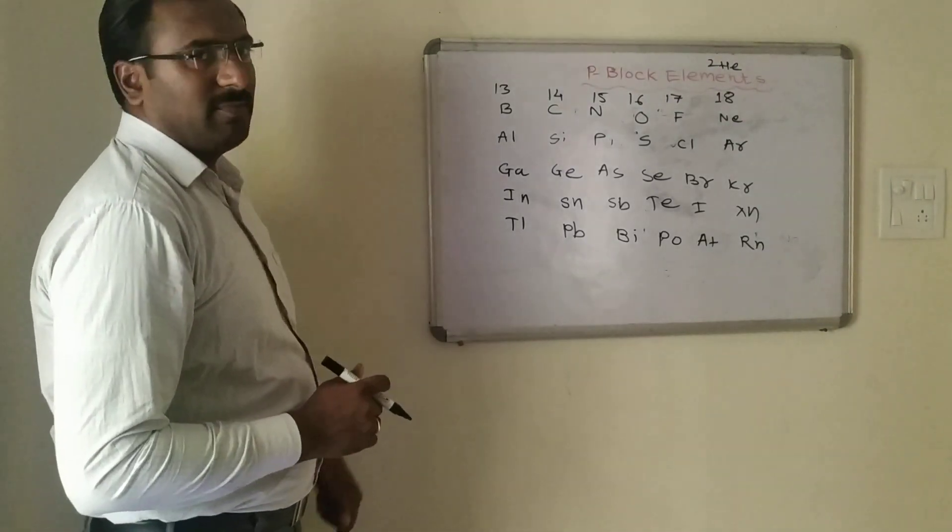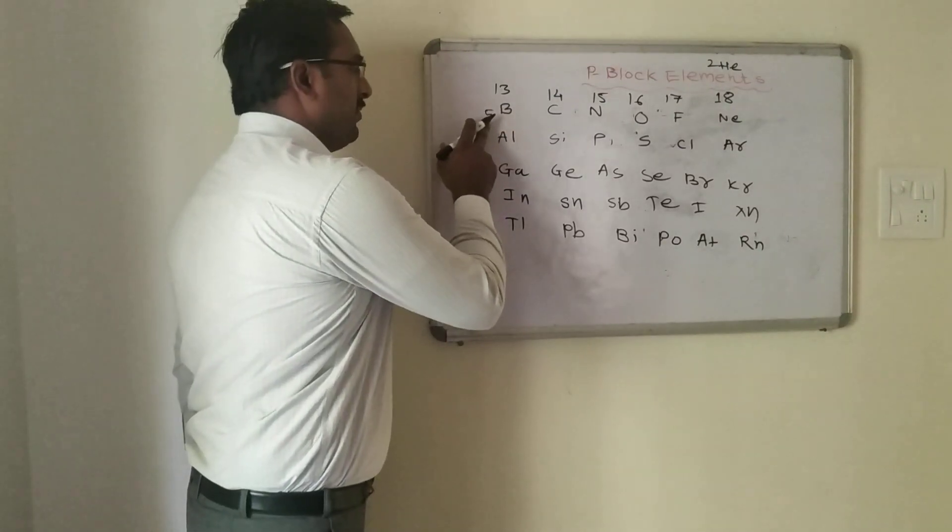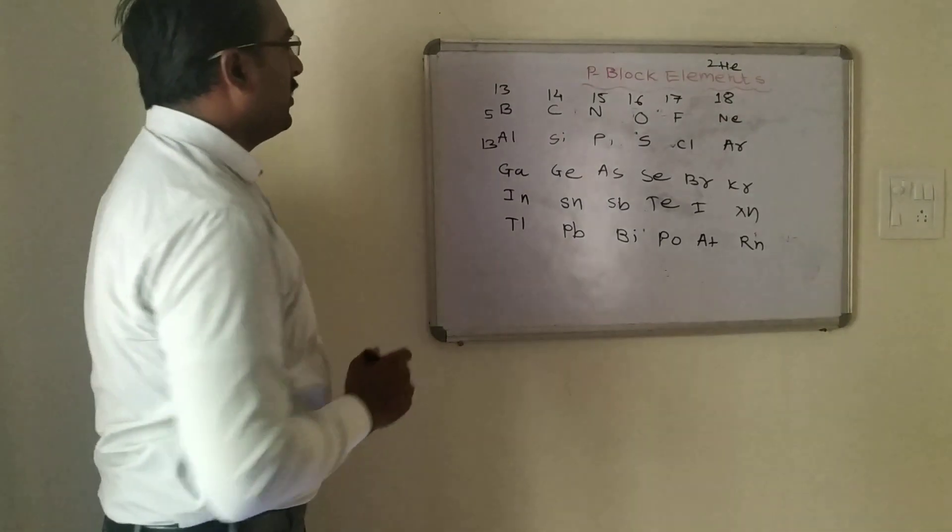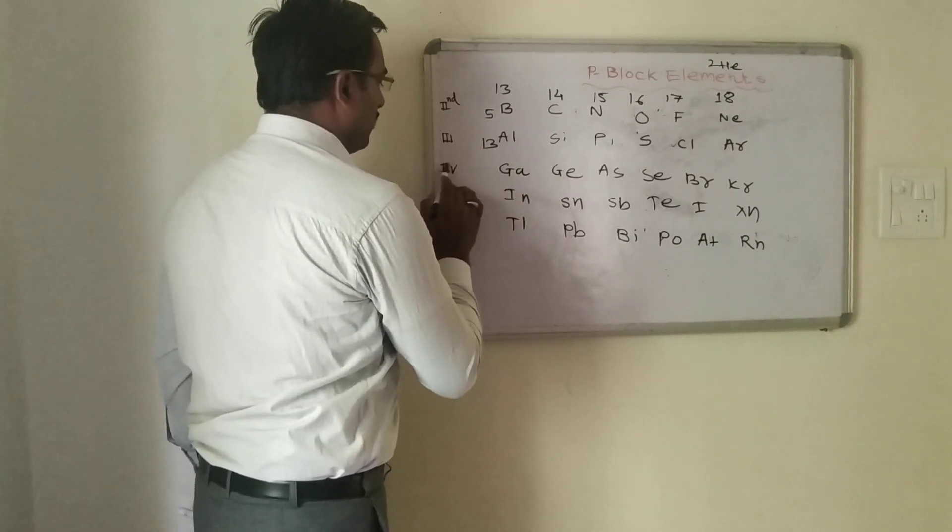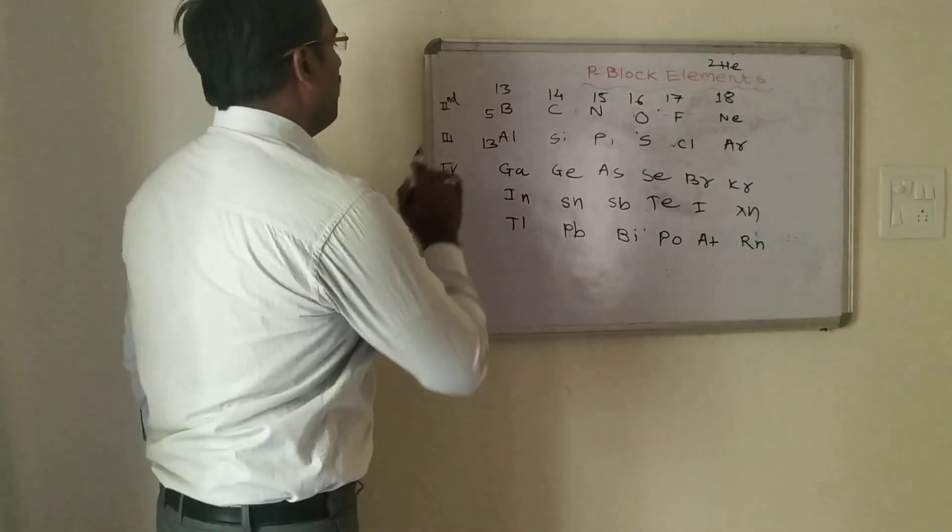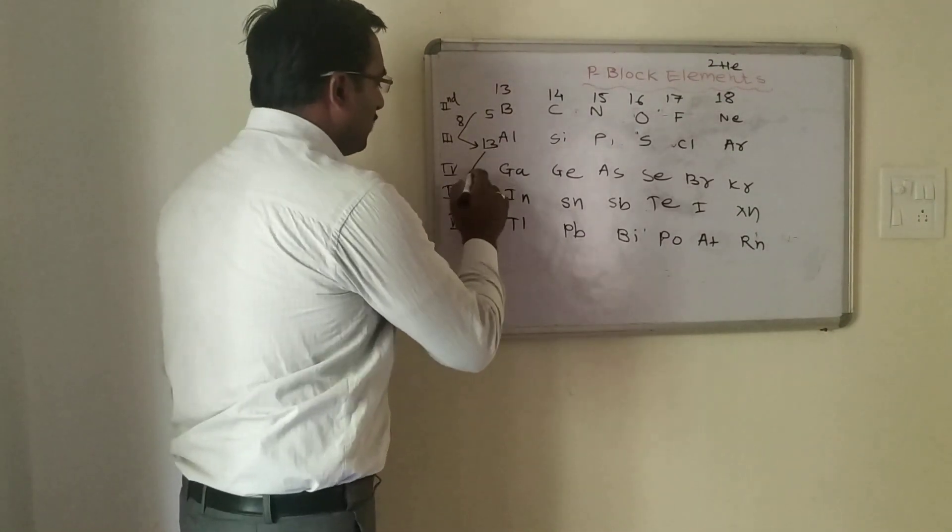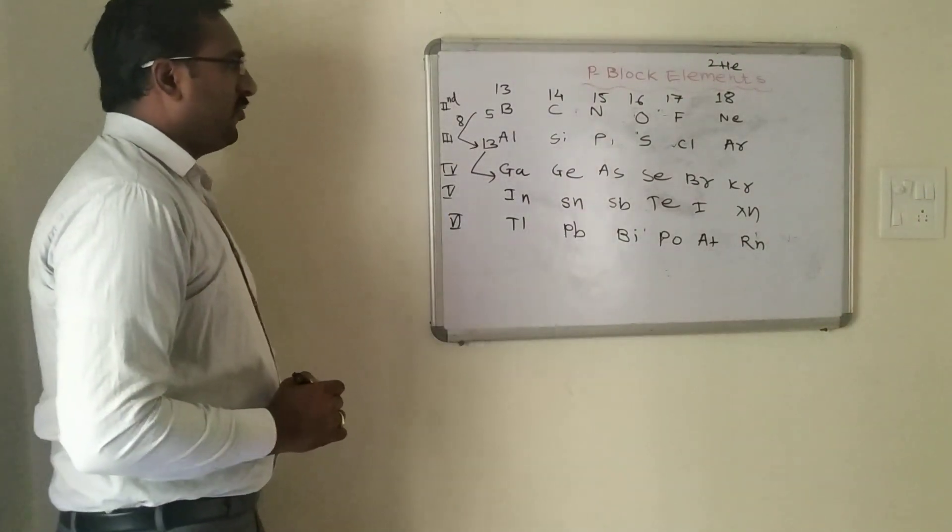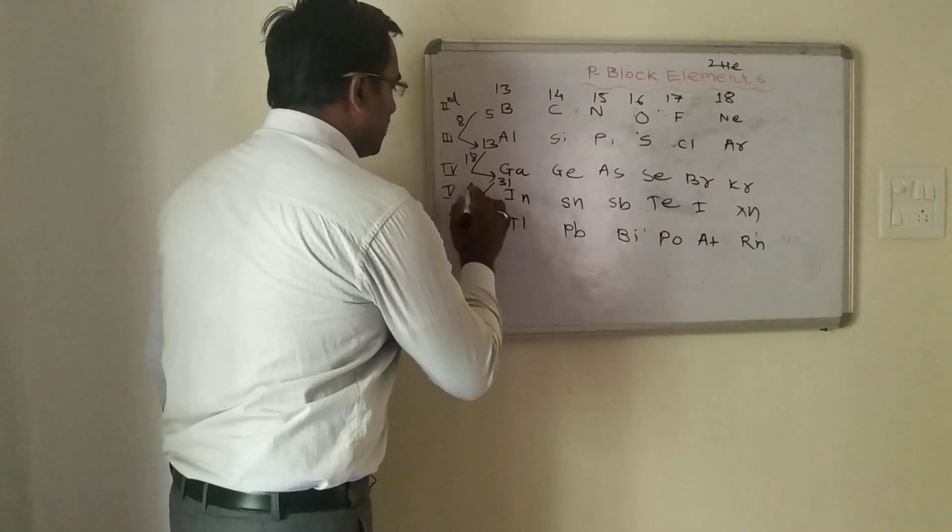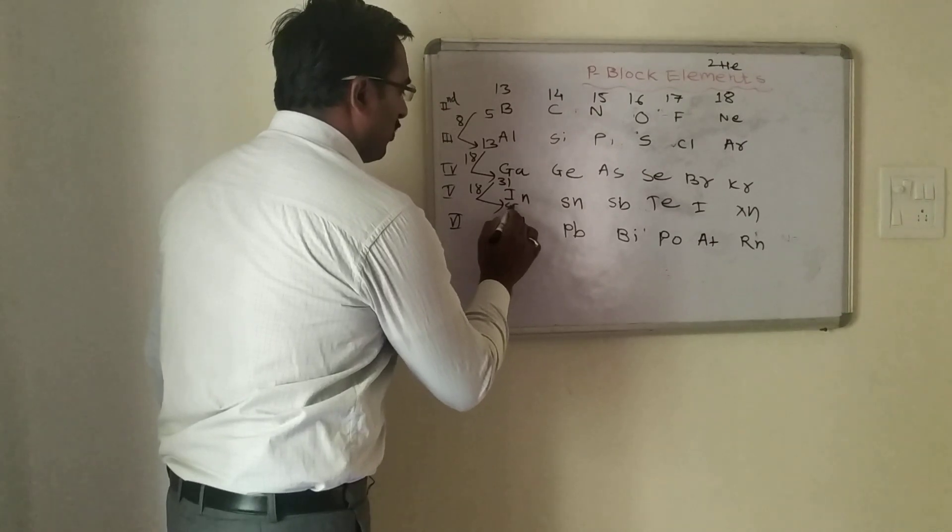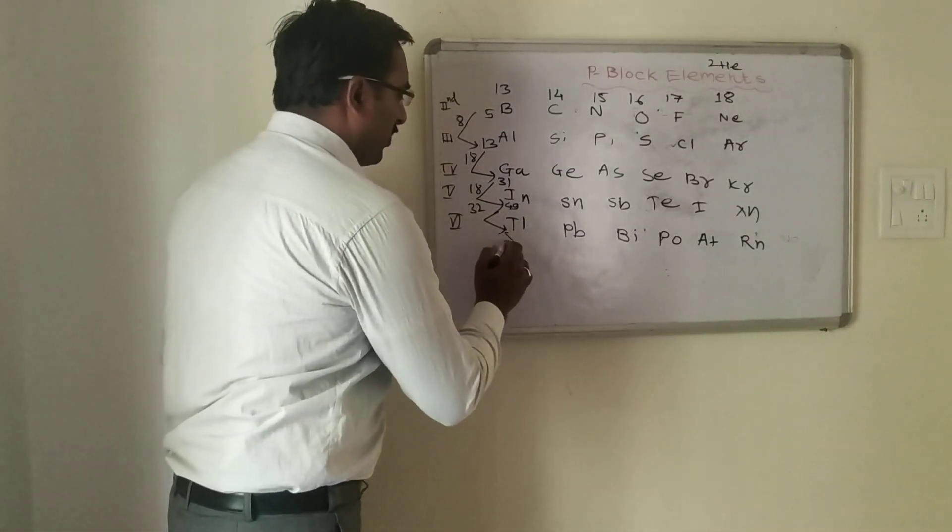Let us discuss the atomic numbers. The atomic number of boron is 5. Aluminum is 13. This is our second period, this is our third period, this is our fourth, fifth, and sixth period. When we jump from second period to third period, there is a jump of 8 electrons, so 5 plus 8 is 13. When we jump from period third to period fourth, there is a jump of 18 electrons, so the atomic number of gallium is 31. Again there is a jump of 18 electrons, so indium is 49. When we jump from period fifth to sixth, there is a jump of 32 electrons, so thallium is 81.